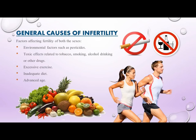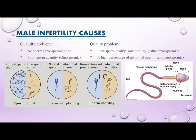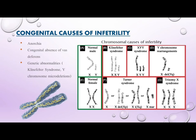General causes of infertility affecting both sexes include environmental factors such as pesticides, toxic effects related to tobacco smoking, alcohol drinking, or other drugs, excessive exercise, inadequate diet, and advanced age. Female infertility causes include infection, polyps, polycystic ovaries, blockage of the uterine tube, uterine septum, adhesions, endometriosis or endometrioma, and fibroids. Male infertility causes include quantity problems such as azoospermia and oligospermia, and quality problems such as low motility and teratozoospermia.